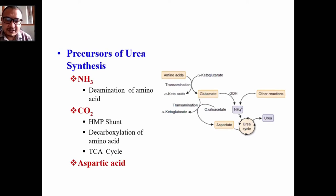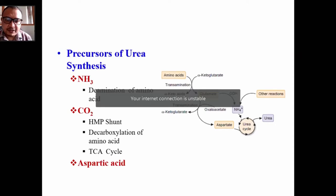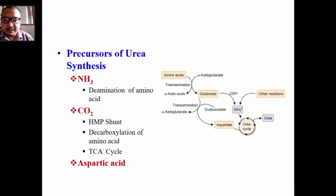Aspartate can be transferred directly to the liver by accepting an amino group from glutamate to form aspartate, which provides the second nitrogen atom for urea synthesis.